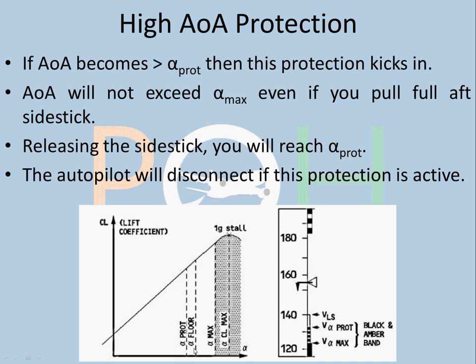Alpha floor is an auto-thrust function where full thrust is commanded because you are close to a 1G stall — you do not want the aircraft to stall. So it will give you full thrust at alpha floor. Even if you pull full aft, the aircraft will not cross alpha max; it is a protection to avoid stall. The autopilot will disconnect if this protection is active. Once you hit V alpha prot, protection kicks in, you will not be allowed to cross V alpha max, and at alpha floor you will get full thrust.